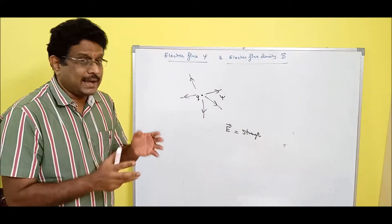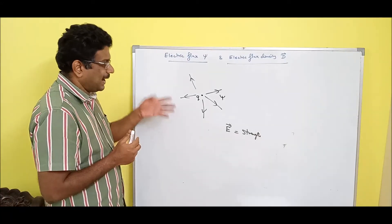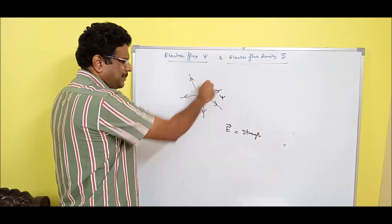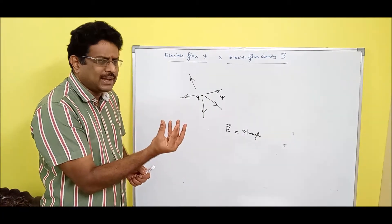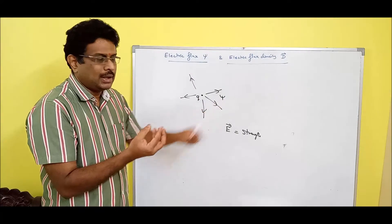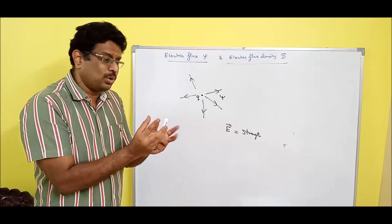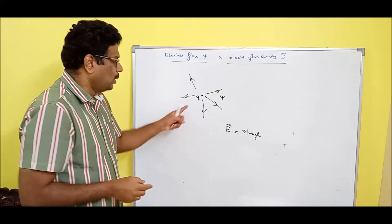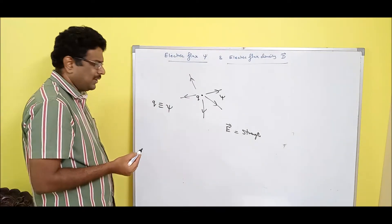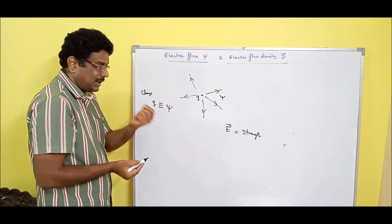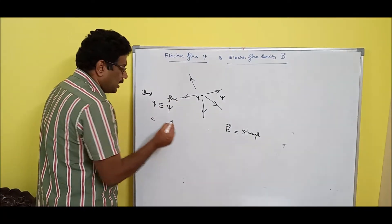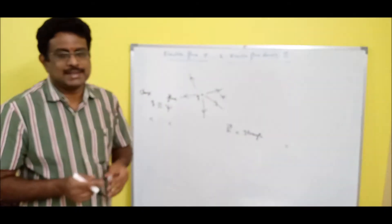Psi is nothing but electric flux. It is just imaginary. So: fire gives heat, charge gives flux. If more fire, more heat; less fire, less heat. More charge, more flux — it is just a representation. So Q is equivalent to psi. Q is the charge available in a metal or wire; flux is available in free space. If the unit of charge is coulomb, the unit of flux should also be coulomb.